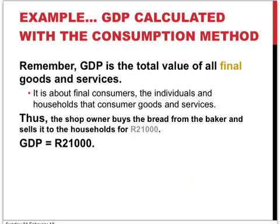The third approach is the consumption method, which values the GDP as the total value of all the final goods and services. So it's only about final consumers — those households and individuals that consume the goods and services. In this case, the shop owner sells the bread to the households for a total of 21,000 rands, which is also the value of the GDP according to this method of calculation.